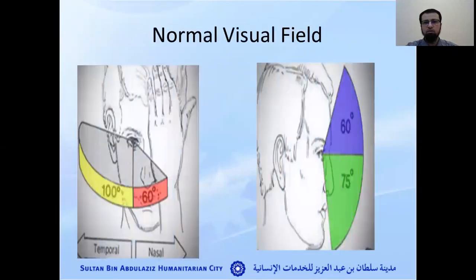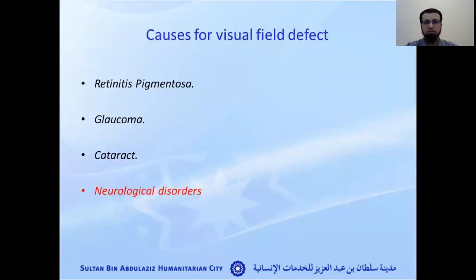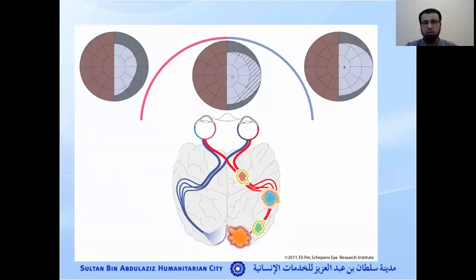As you know, the normal vision for any person is 160 degrees for each eye and 135 degrees vertically for each eye as well. This could be disrupted or affected in the central vision or peripheral vision.